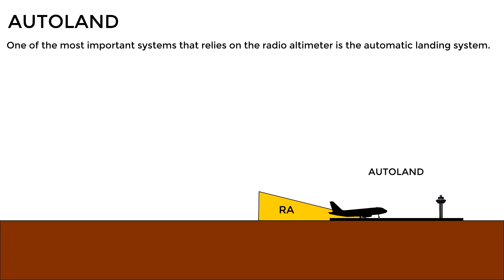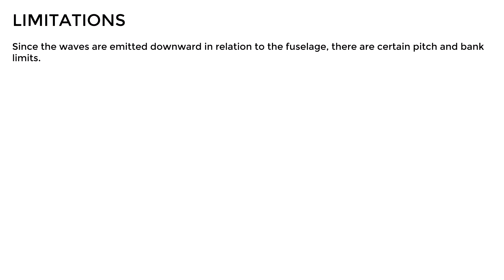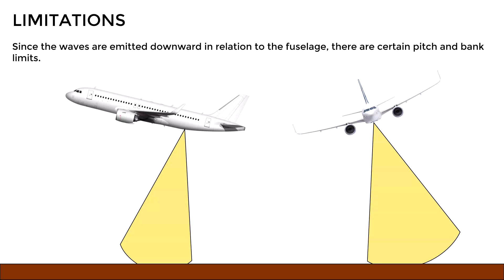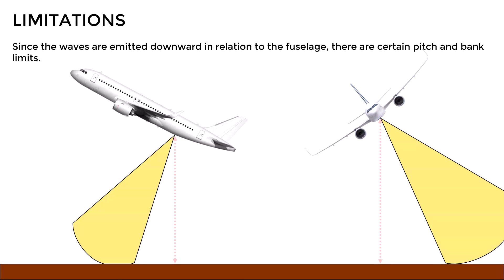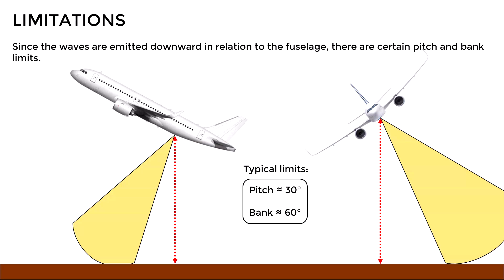Although the radio altimeter is quite accurate and reliable, it has certain limitations. One of them is that since the waves are emitted downward in relation to the fuselage, there are certain pitch and bank limits. During normal maneuvers, the radio altimeter can determine the height of the aircraft correctly. However, if the pitch or bank limits are exceeded, the waves emitted by the system are not able to determine the current height of the aircraft, so there will be an error in the indication. Typically, the pitch limit is around 30 degrees and the bank limit is around 60 degrees, but this will vary depending on the design of the system.